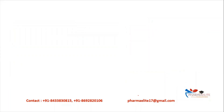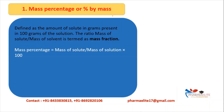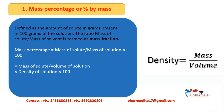Let's learn about the methods to express concentration. First is mass percentage or percent by mass. It is defined as the amount of solute in grams present in 100 ml of solution. The ratio of mass of solute upon mass of solvent is termed as mass fraction. Its formula is: mass percentage = (mass of solute / mass of solution) × 100. Mass of solution can also be written as mass of solute upon volume of solution into density of solution.